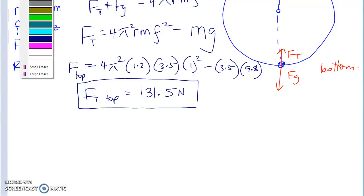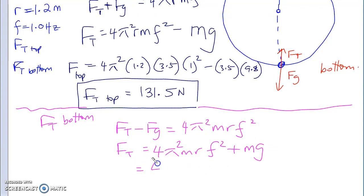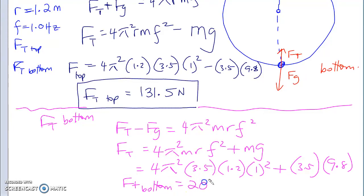And now we're going to do the same thing for the bottom. So, FT at the bottom. Now, of course, my tension is larger than my gravity. FT minus FG, which equals to 4π²RmF². And you've got FT, which equals to 4π²MRF² plus MG. And you have 4π² times 3.5 times 1.2 times 1² plus 3.5 times 9.8. And what was your FT at the bottom? 200.1. So 200.1 Newtons. So clearly we can see there is a difference between the tension at the top and the tension at the bottom. At the bottom, maximum tension. At the top, minimum tension. So this was one of our examples that we did yesterday.